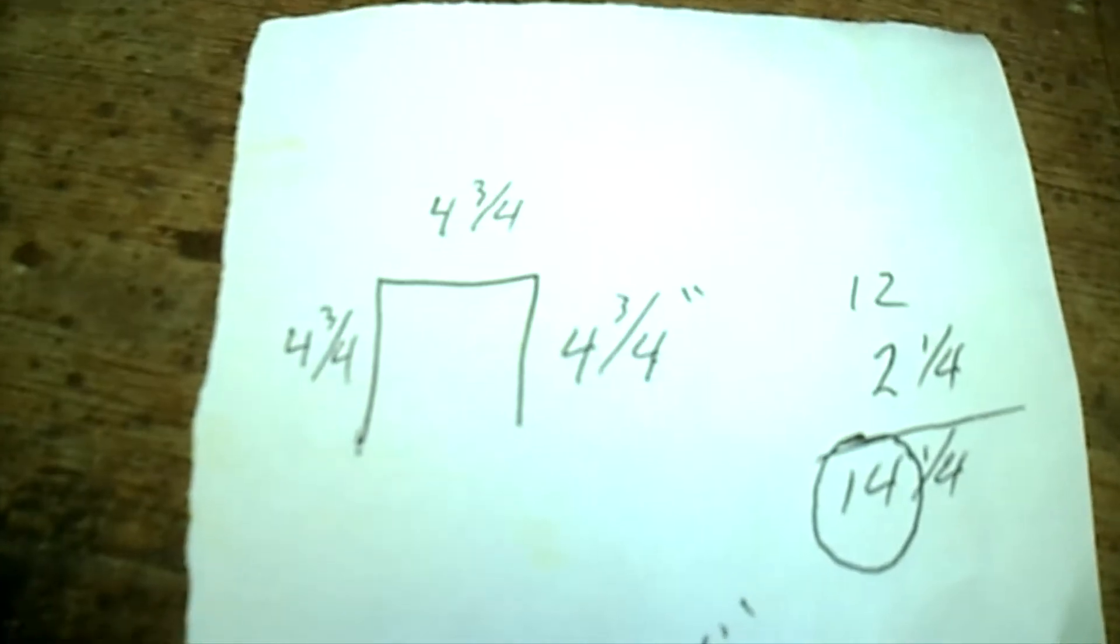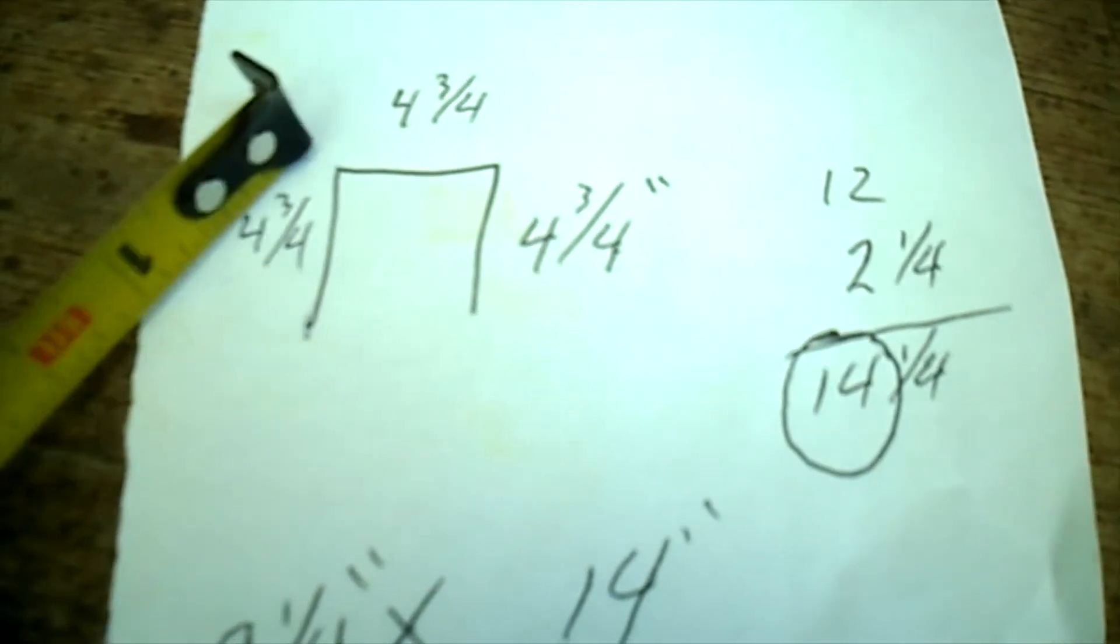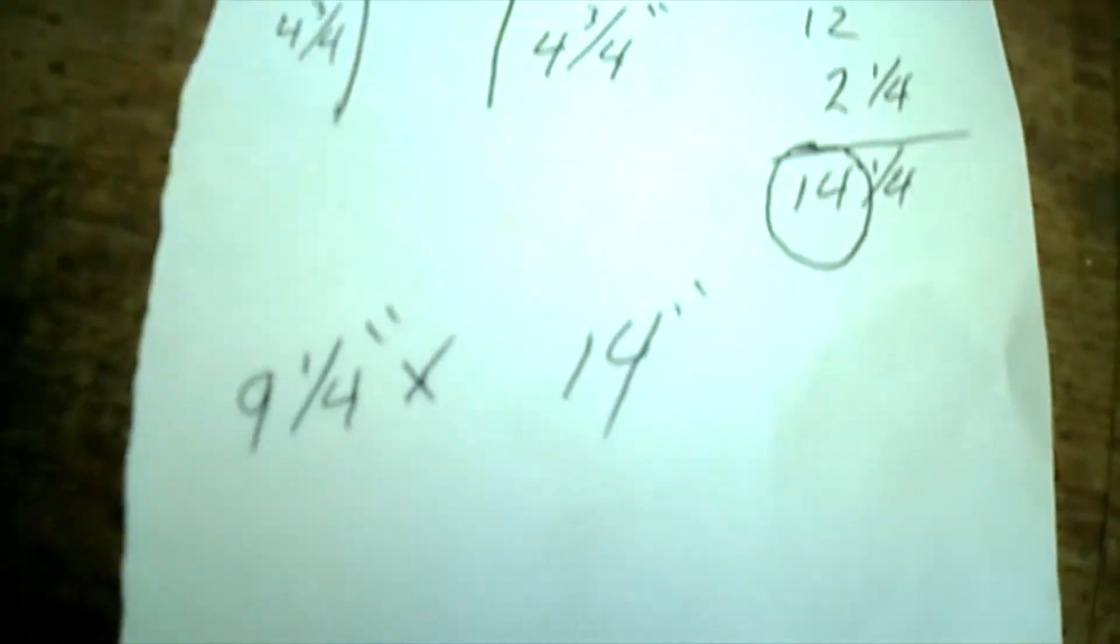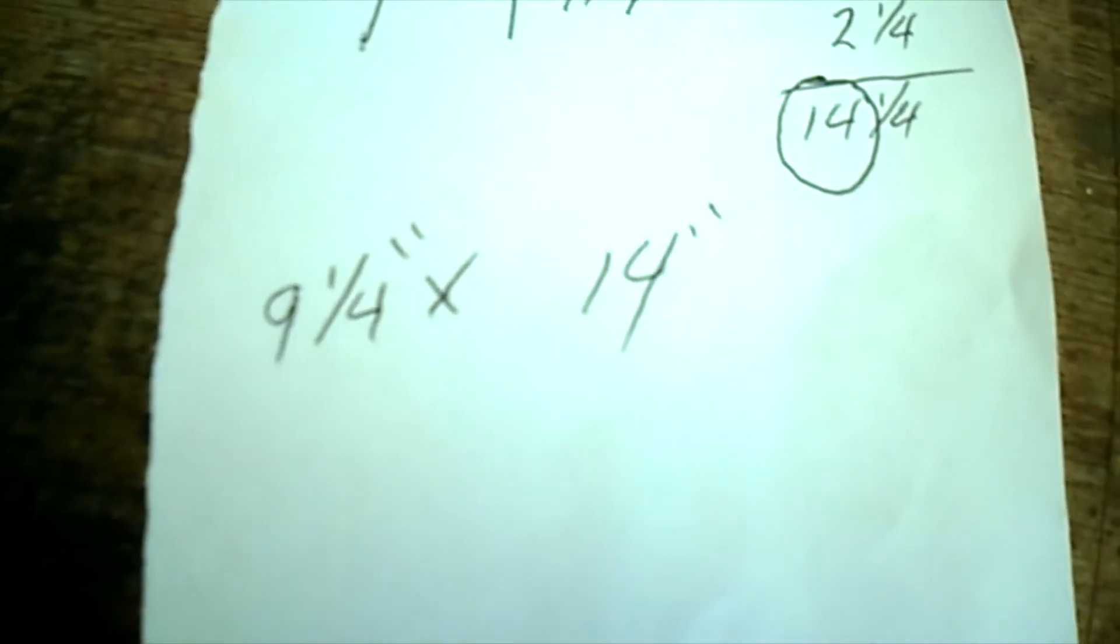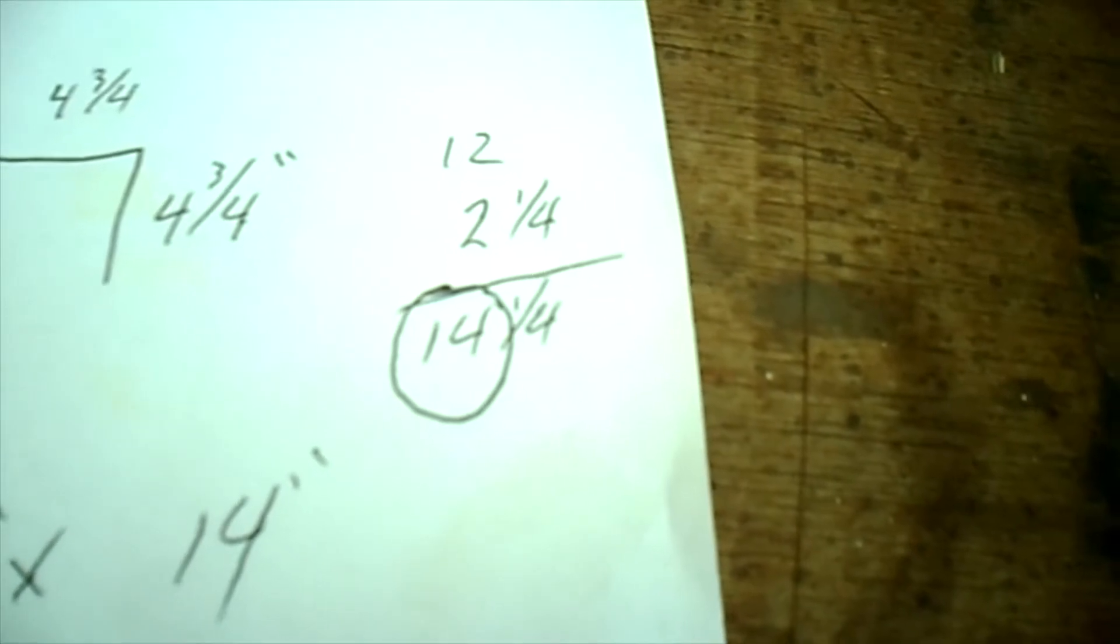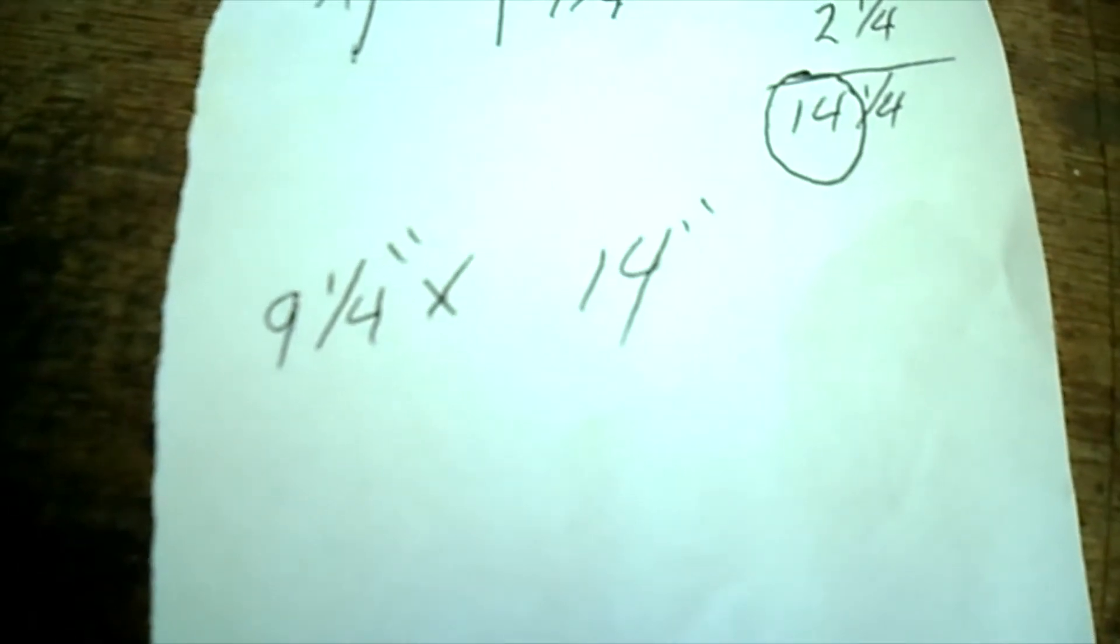We need a box that's about four and three-fourths wide. And I also measured up the sides down to this lip here - that's actually four and three-fourths also. So we need four and three-fourths up, four and three-fourths over, and four and three-fourths down. And then it needs to be nine and a quarter long. So that gives us... we need a nine and a quarter by 14-inch piece of steel.